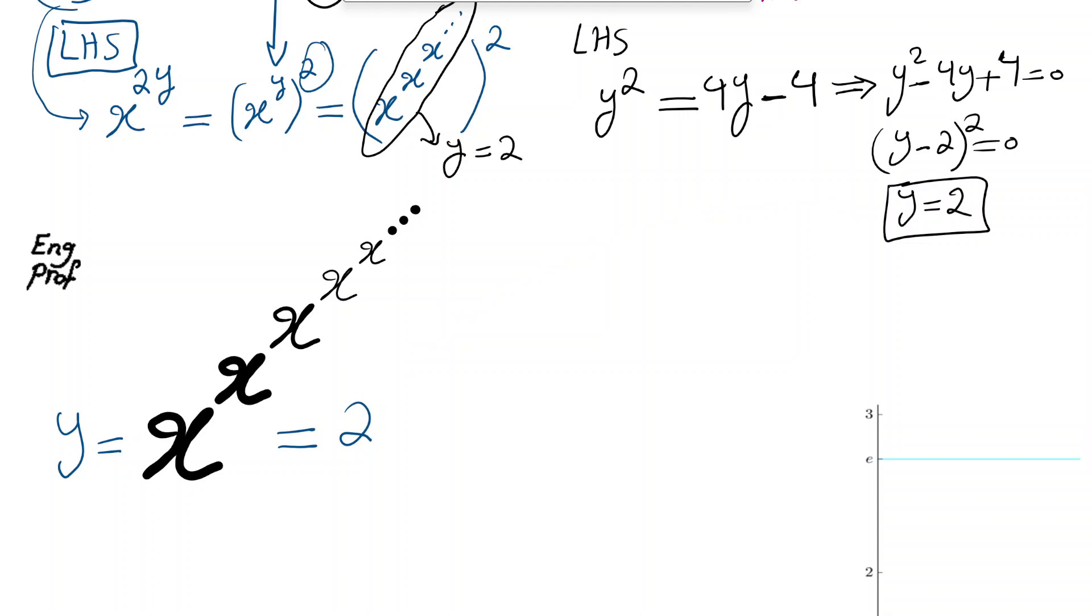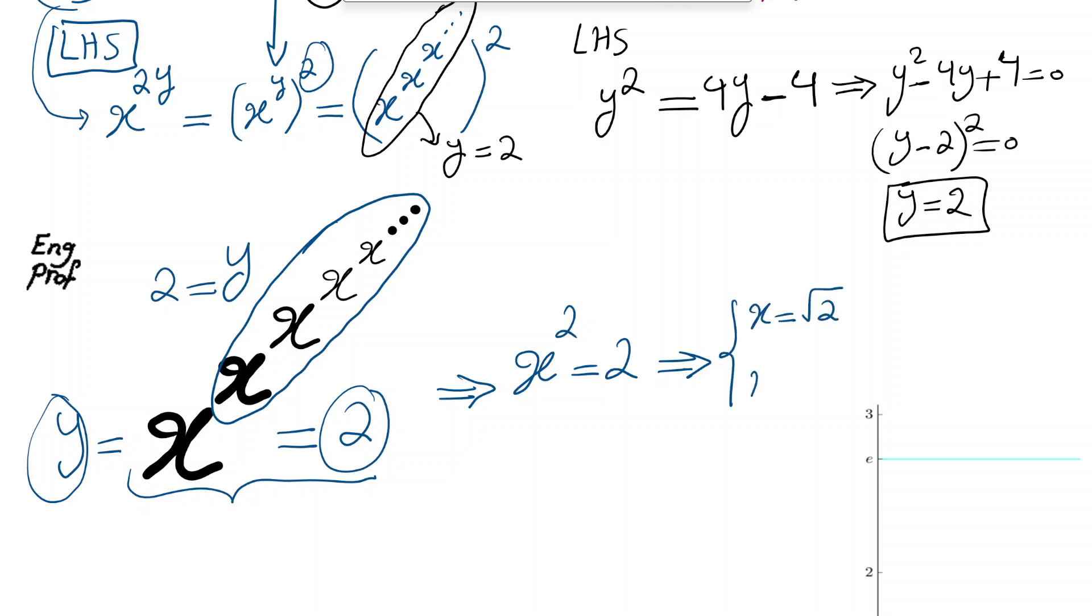Okay, we use the same trick here. This exponent is y itself as well, because it goes up to infinity. And we said that y has to be equal to 2. Therefore, the exponent is equal to 2. So with that in mind, I can, in summary, say my equation specifically to solve this becomes x to the power 2 should be equal to 2. As a result, x is either square root of 2 or is negative square root of 2.